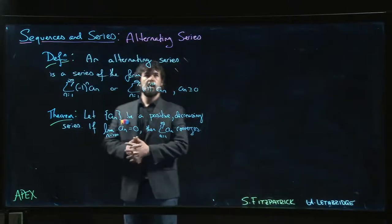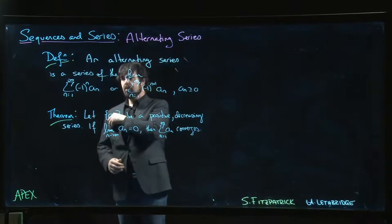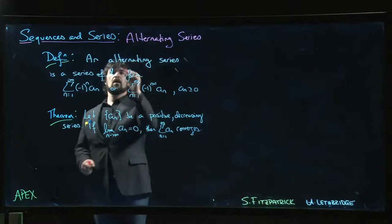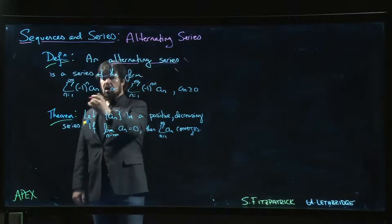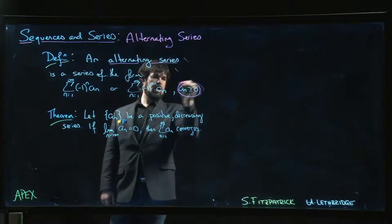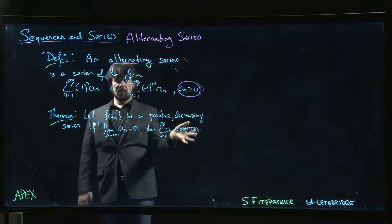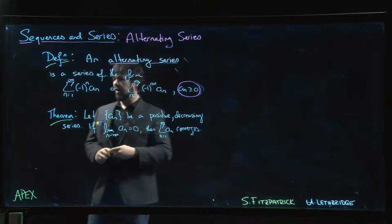All right, so the next topic we want to look at is alternating series. The definition is here: an alternating series is a series of one of the following forms. So we have these a_n's that are still kind of positive—you still start with the positive sequence like usual, but you put this sign factor in front.